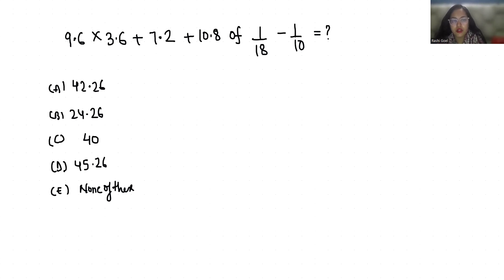So 9.6 times 3.6 plus 7.2 plus 10.8 of, we remove, write, multiply. 1 by 18 minus this 1 by 10 I can write 0.1. Now we remove the decimal and write 10 here.